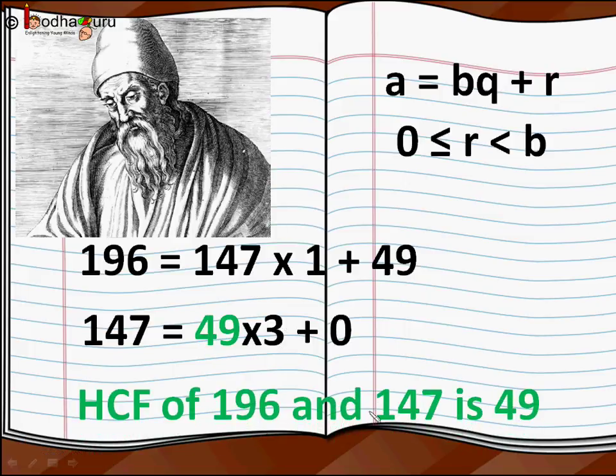So the remainder is 0, so we stop here. So 49 is the HCF of 196 and 147. But what about LCM?